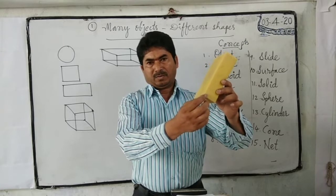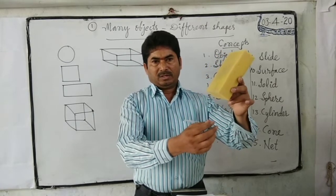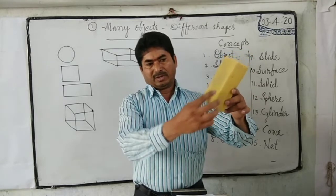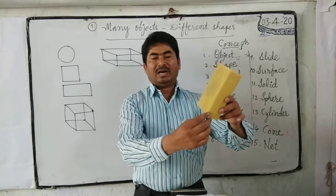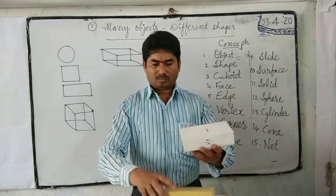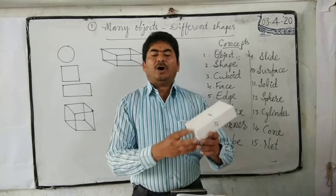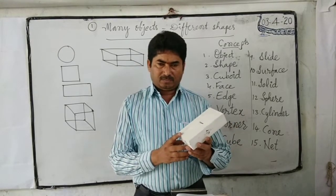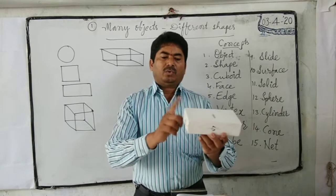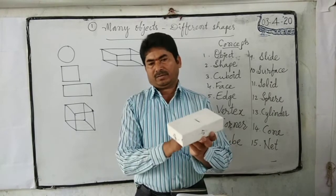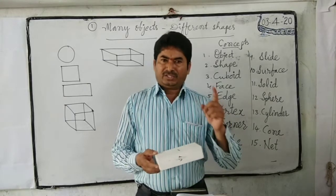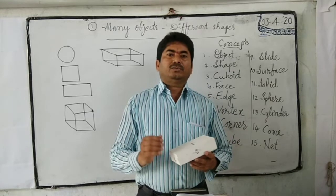Next, corner. What is a corner? The joining point or meeting point of these edges is called a corner or vertex. How many vertices are there in a cube? We can count: one, two, three, four, five, six, seven, eight. A cube has eight vertices. Note: vertex is singular, vertices is plural.